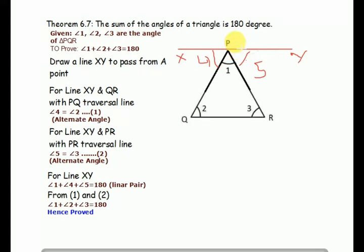XY is a traversal line of XY and QR. That's why angle 4 equals angle 2. These are called alternate interior angles. Same case here for line XY and PR.